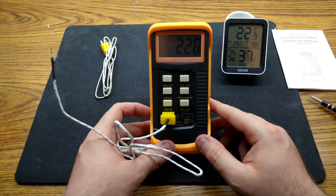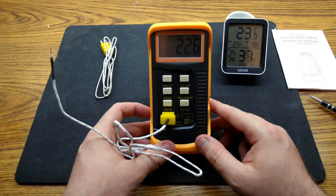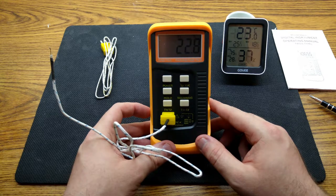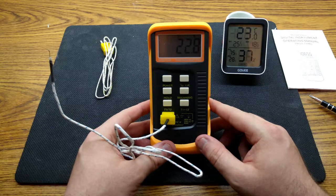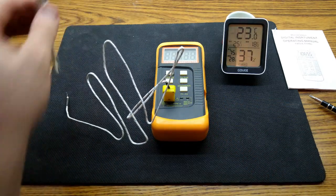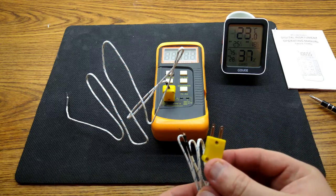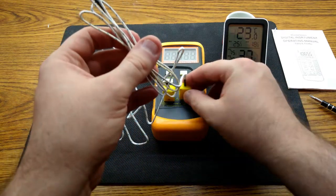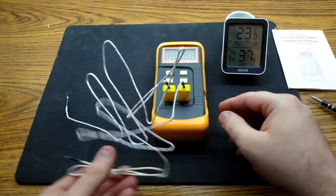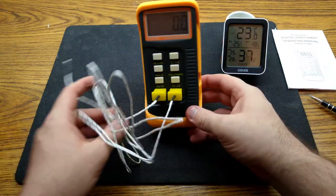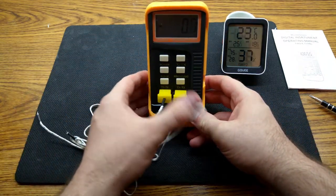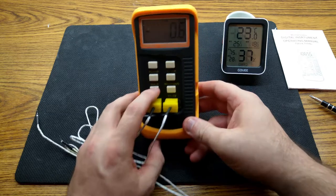This is especially considering the unit is stated as having an accuracy of between plus and minus 0.5 degrees Celsius. If I go ahead and plug in the second thermocouple, we can see that it also gives an accurate value when compared to the Gove H, and that the T1 minus T2 setting is working as expected.